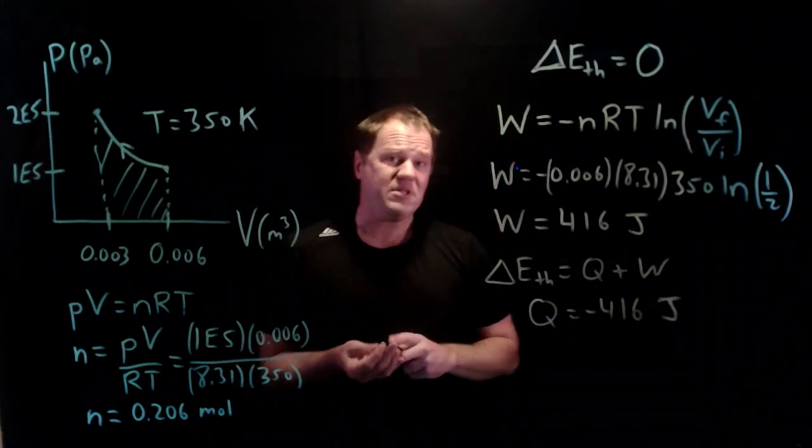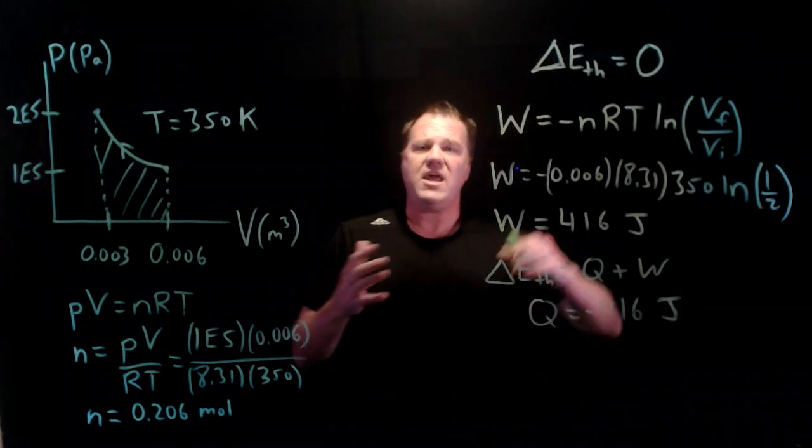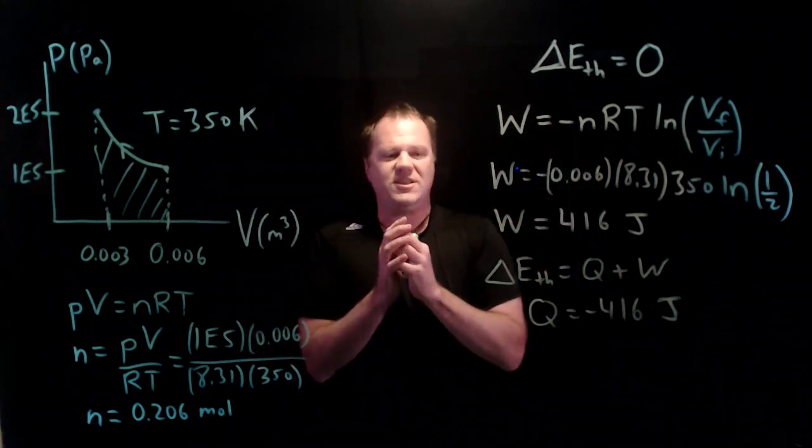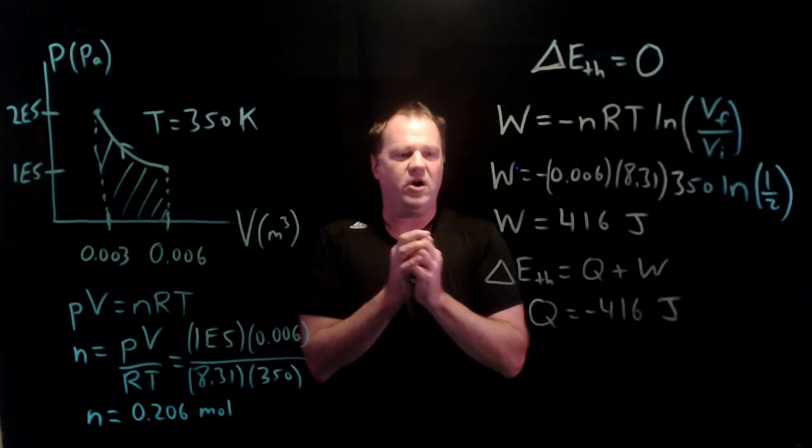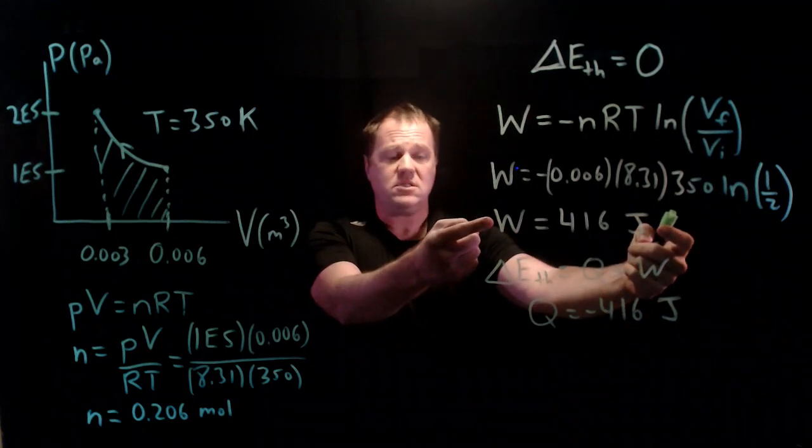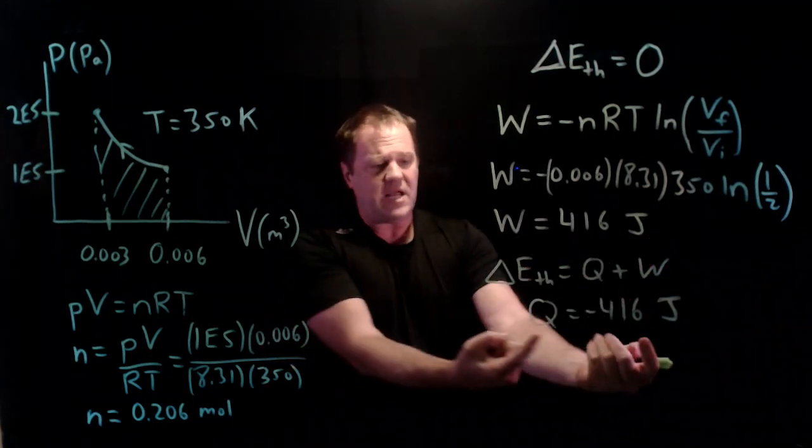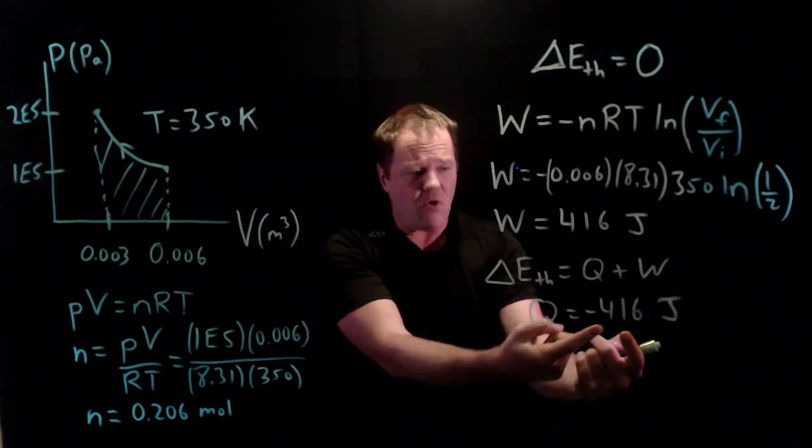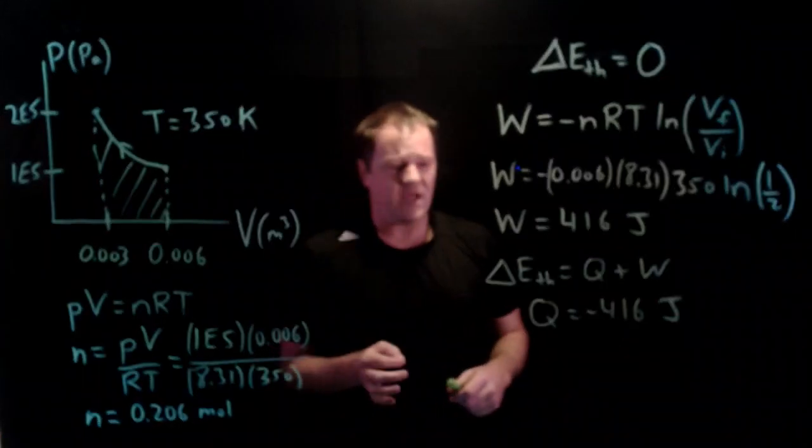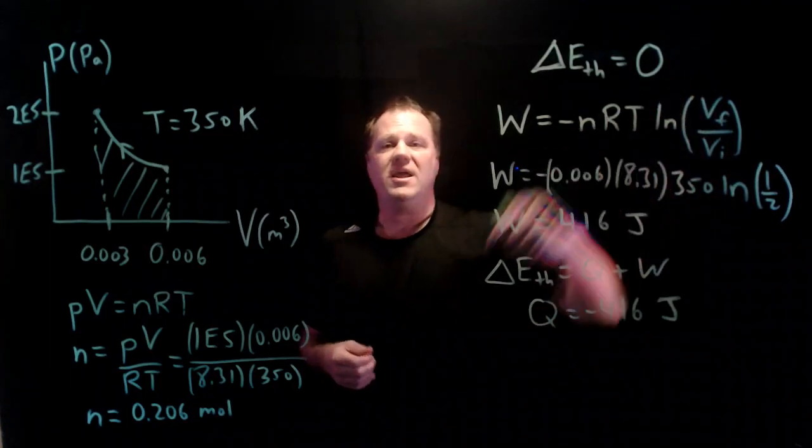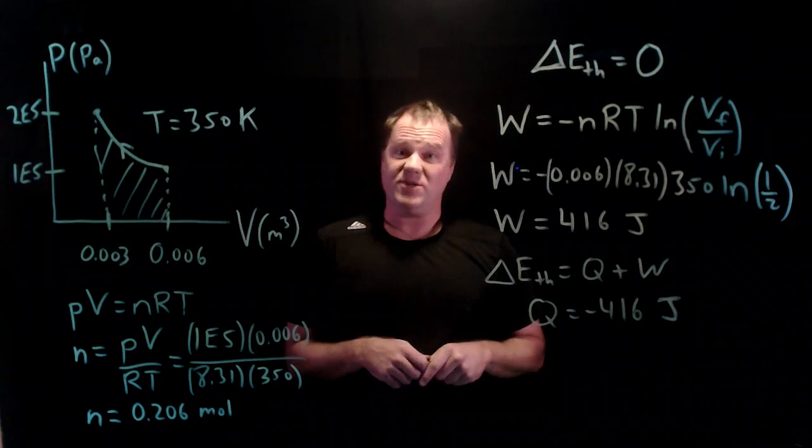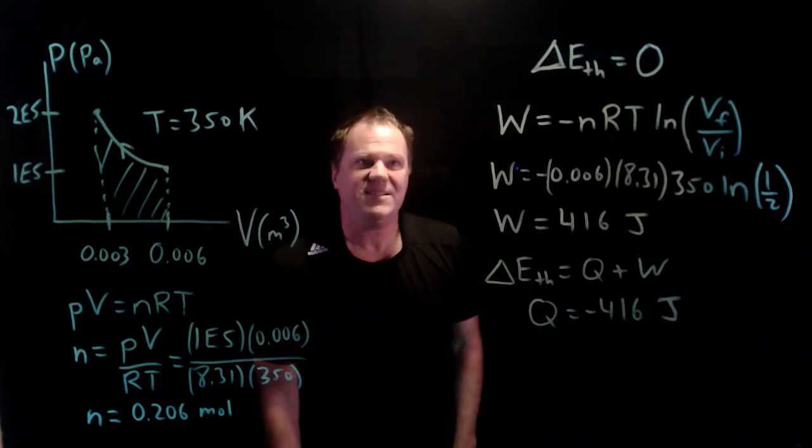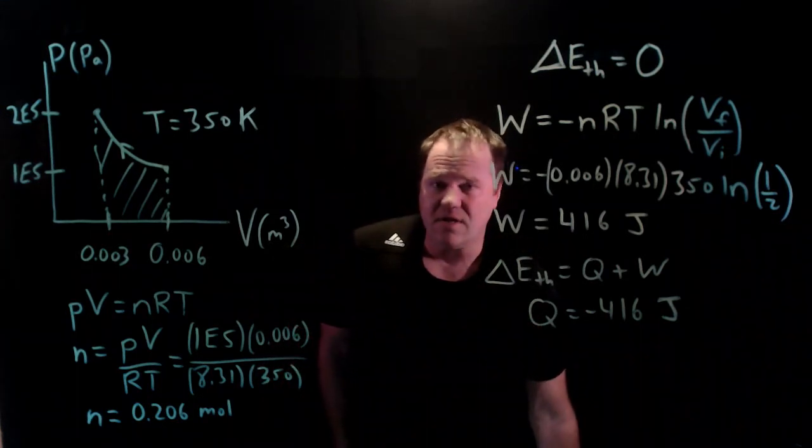So basically what happens in this isothermal compression, the external world smashes this gas, makes it smaller, gives it 416 joules of energy. Simultaneously that gas gives out 416 joules of energy and in total it gains no energy at all. All right. So that's it. Thanks for watching and I'll see you next time.